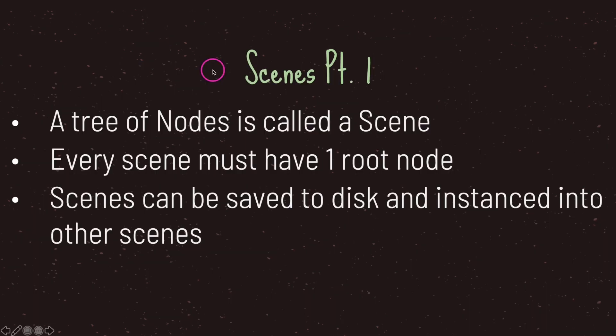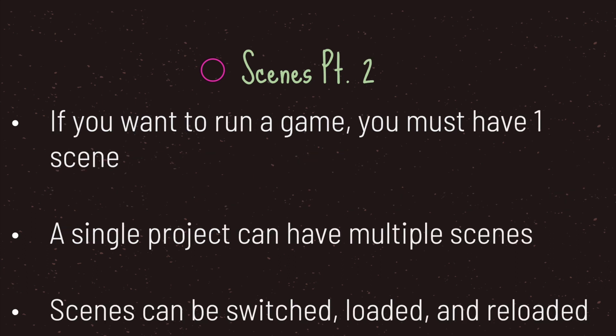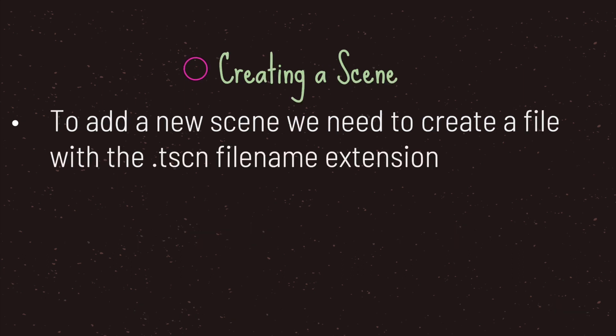A tree of nodes is called a scene, and every scene must have one root. Scenes can be saved to disk and instanced into other scenes. If you want to run a game you must have at least one scene. A single project can have multiple scenes, and scenes can be switched, loaded, and reloaded. To add a new scene you need to create a file with the extension .tscn, short for text scene.